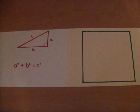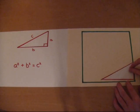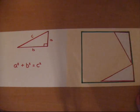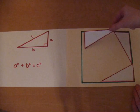Now, if I want to prove this, all I have to do is make four copies of the triangle and arrange them inside this green square. And if I do that, I will create a square in the center which has sides of length c.